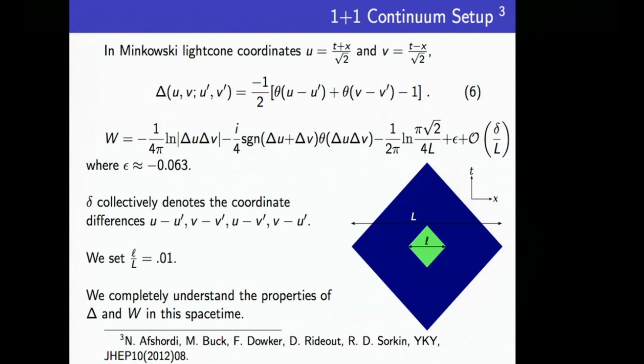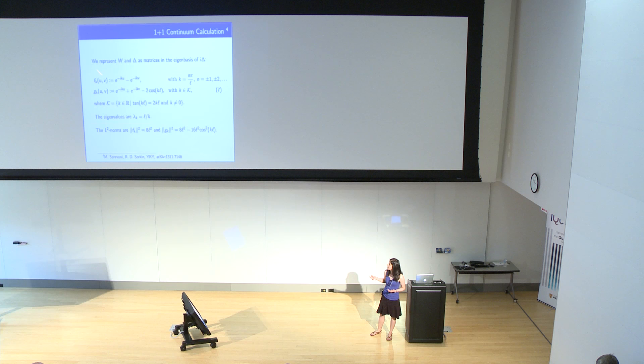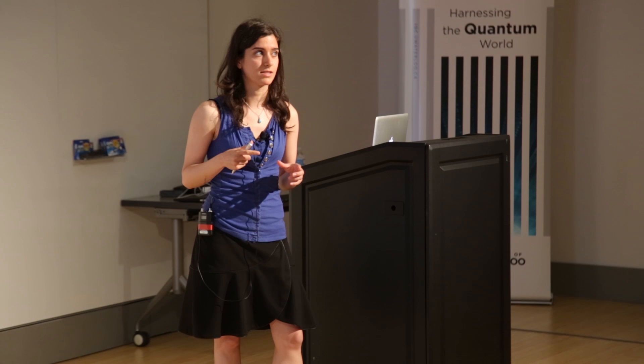We express W and delta as matrices in the eigenbasis of delta, which consists of two sets of eigenfunctions. They're basically linear combinations of plane waves. This one has an extra cosine term. The wave number k is given by n pi over L, where curly L was the diameter of the smaller causal diamond, and these matrices are finite matrices.